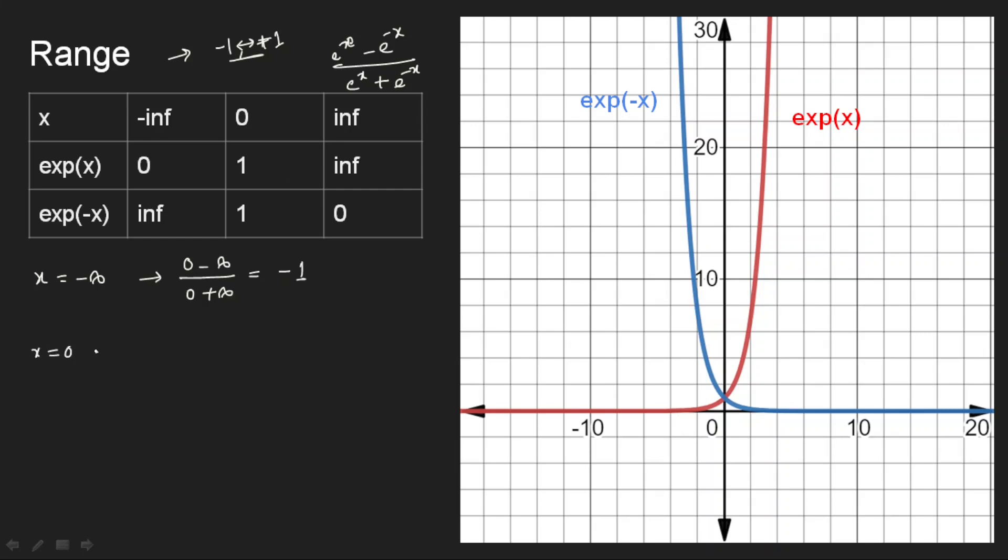Tanh function is e^x minus e^(-x) divided by e^x plus e^(-x). I am substituting the values over there. If I take x as 0, then both are 1. So it is 1 minus 1 divided by 1 plus 1, which is 0. And if my x is plus infinity, this is like infinity minus 0 divided by infinity plus 0, which equals 1.